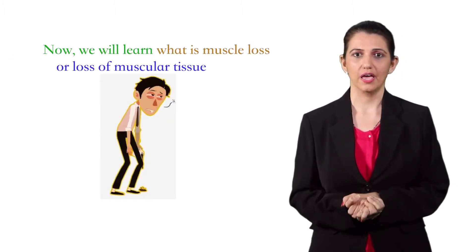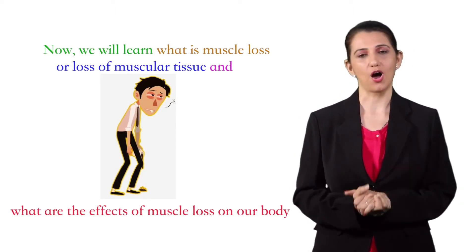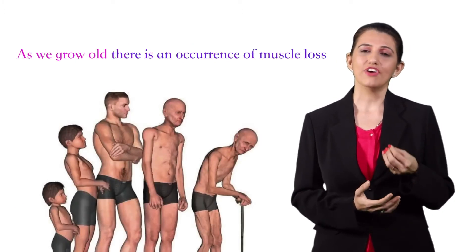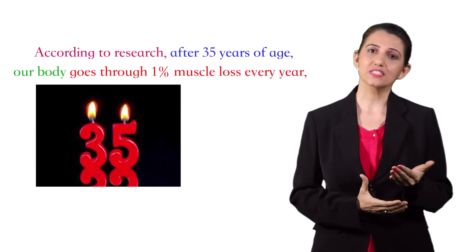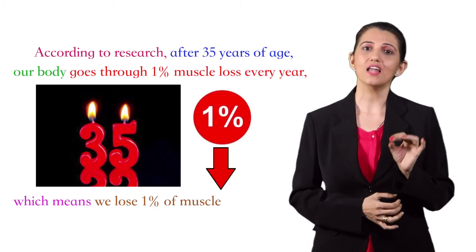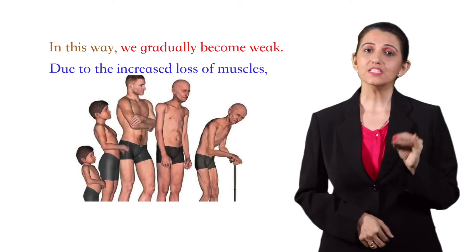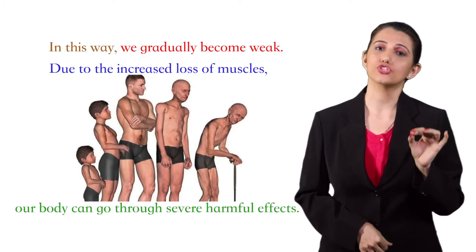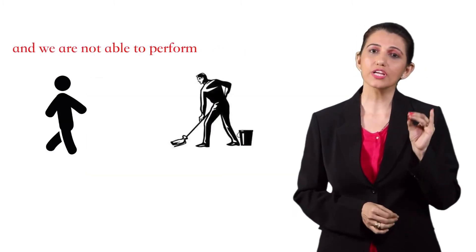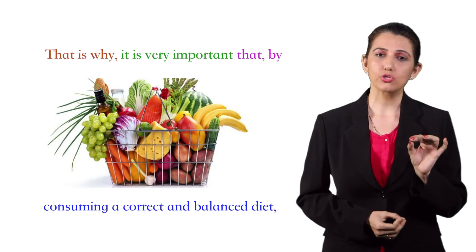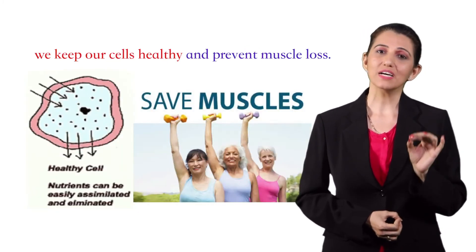Now, we will learn what is muscle loss or loss of muscular tissue and what are the effects of muscle loss on our body. As we grow old, there is an occurrence of muscle loss in our body, which means our muscles get damaged. According to research, after 35 years of age, our body goes through 1% muscle loss every year, which means we lose 1% of muscle every year. In this way, we gradually become weak. Due to the increased loss of muscles, our body can go through severe harmful effects. Our body becomes weak, there is lack of energy in our body, and we are not able to perform our daily chores properly. That is why it is very important that by consuming a correct and balanced diet, we keep our cells healthy and prevent muscle loss.